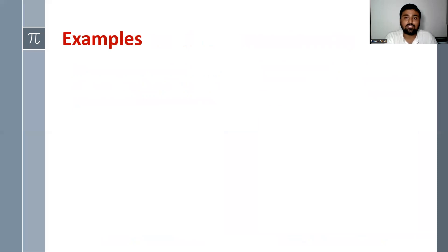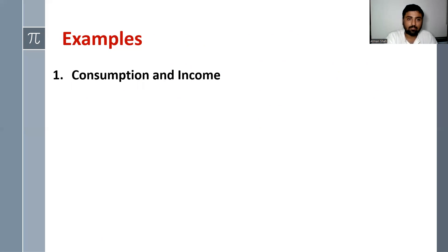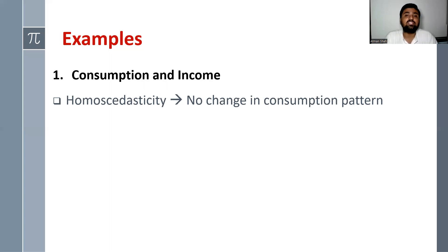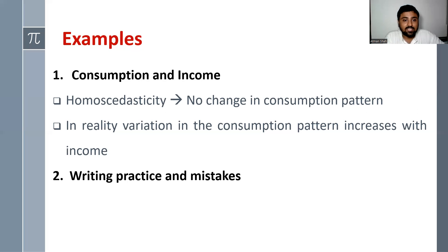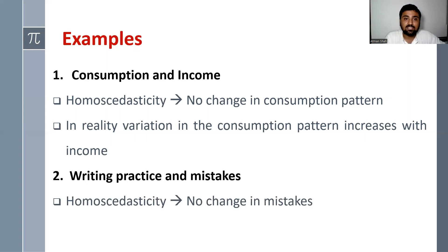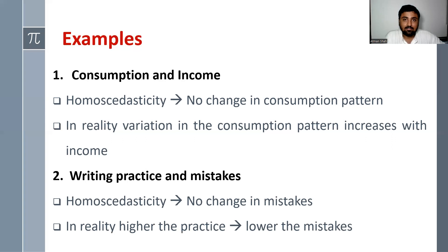Let's understand heteroscedasticity with examples. The first example relates to consumption expenditure and income. Homoscedasticity assumes no change in consumption pattern with changes in income, but in reality variation in consumption increases with income — higher income means higher variation in consumption expenditure, and lower income means lower variation. This causes the heteroscedasticity problem. The second example involves writing practice and mistakes. Homoscedasticity assumes no change in mistakes with writing practice, but in reality higher practice leads to fewer mistakes, again producing heteroscedasticity in the data.